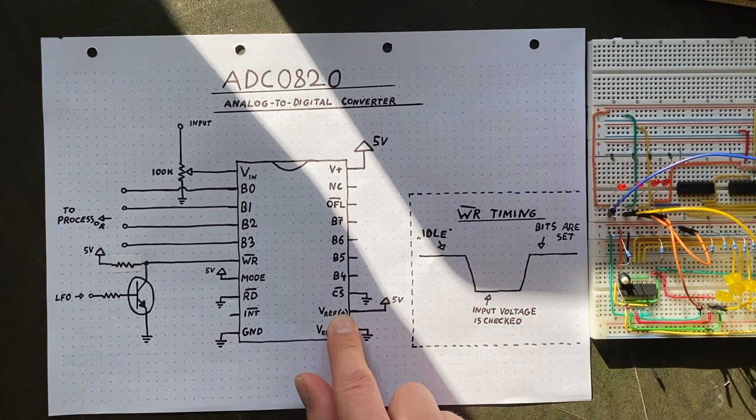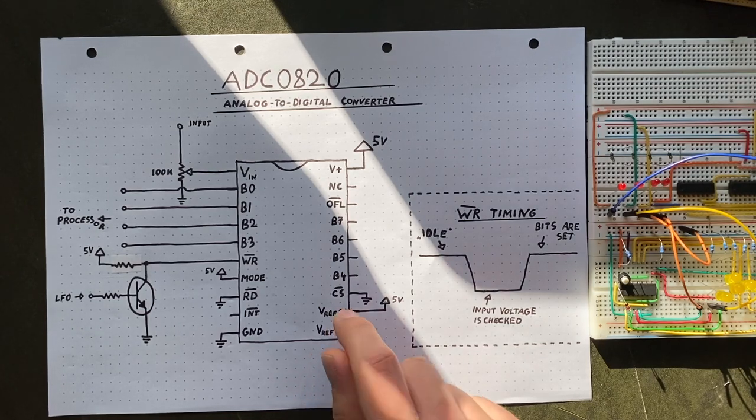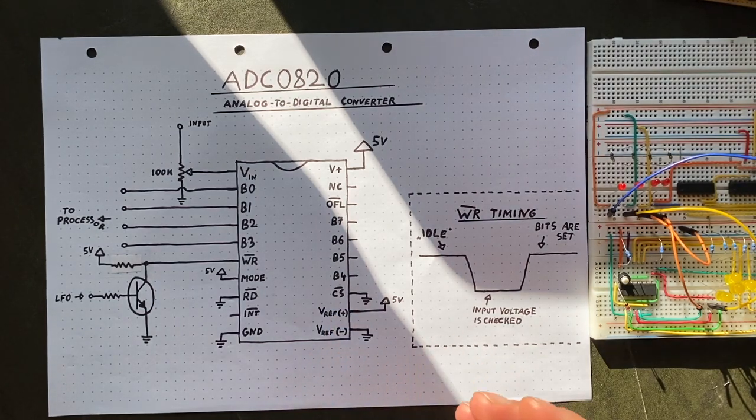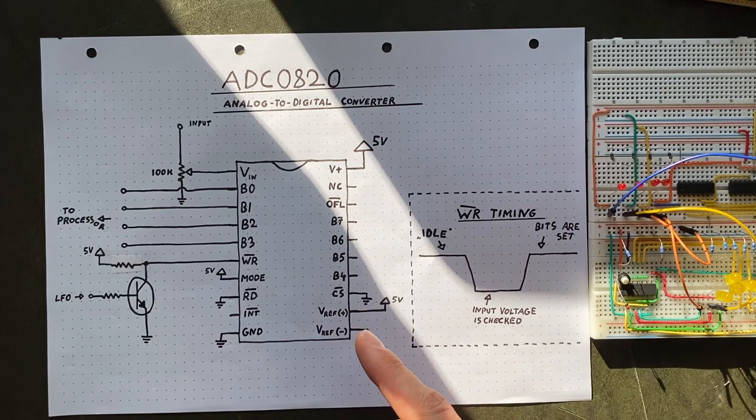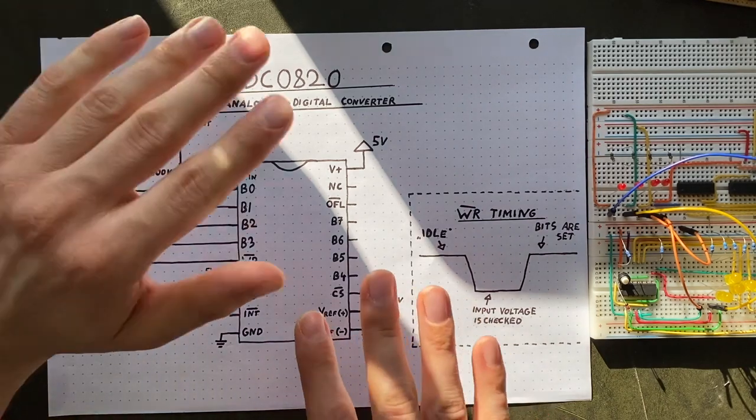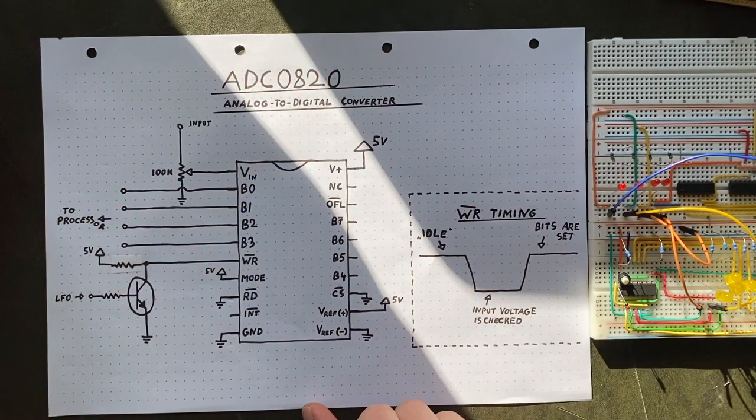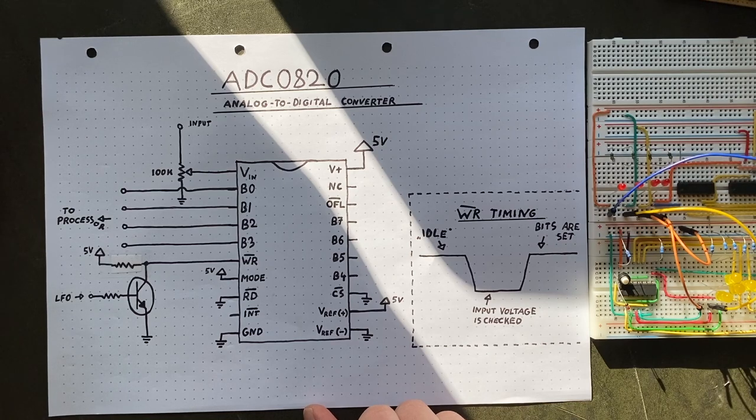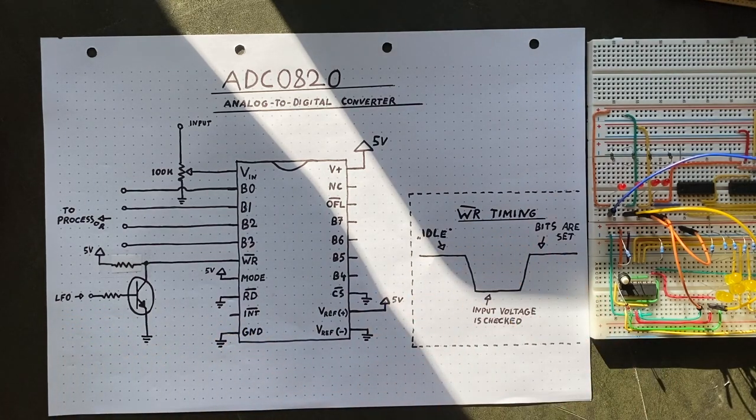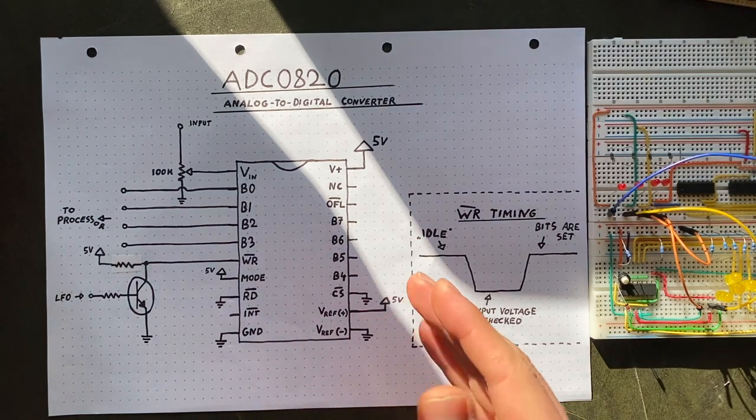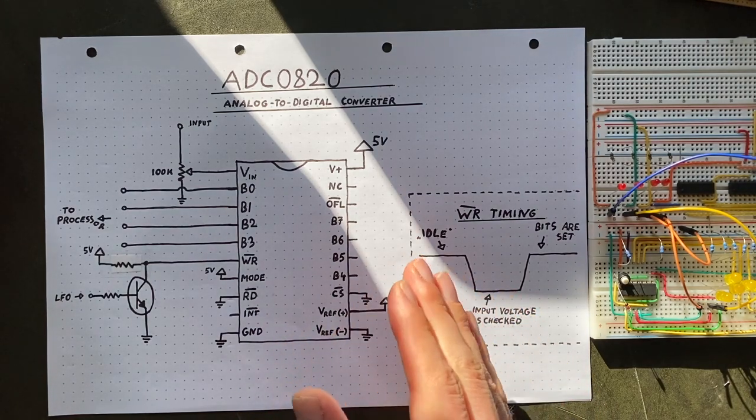This pin should be vaguely familiar from our DAC setup. It's used to set the chip's reference voltage. The idea is basically the same. We are telling the chip the voltage range that should be divided across its 256-bit states. So theoretically, if we put in 256 volts here, the chip would register each volt at the input as one bit state. But because that would also set our chip and possibly my house on fire, let's stick to a lower value.